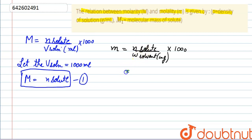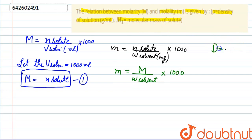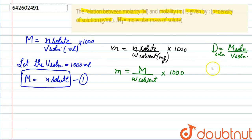Now we will work on the molality formula: small m equals moles of solute divided by weight of solvent, multiplied by 1000. We don't know the weight of solvent yet. We are given the density, and density equals mass of solution divided by volume of solution.